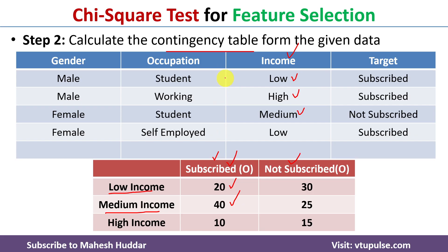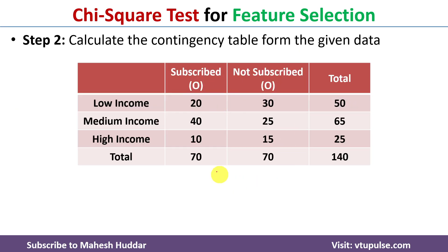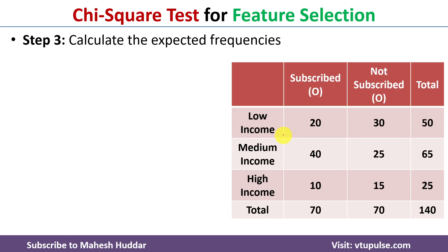Just for example purposes, I have shown a part of the given data and demonstrated how to calculate the contingency table. The same contingency table is shown again with a total column and total row added. Coming to the third step, we need to calculate the expected frequencies. We already know the observed frequencies; now we need to calculate the expected frequencies.